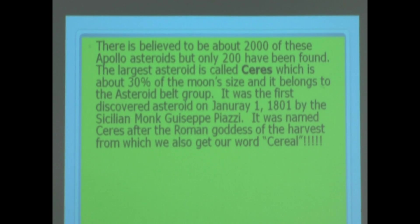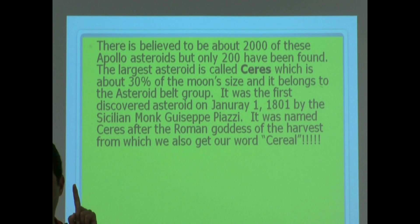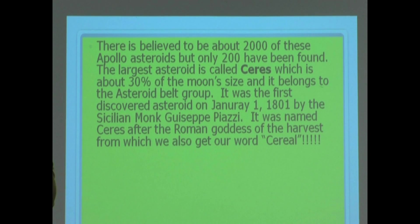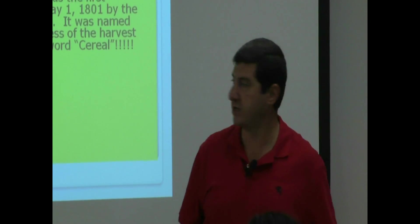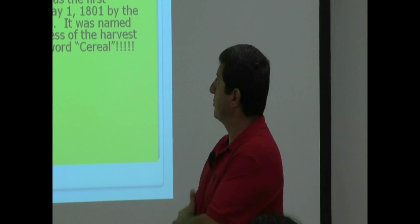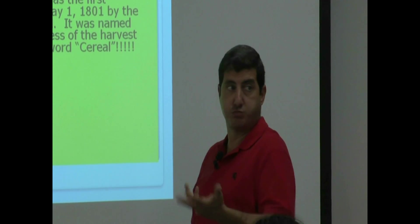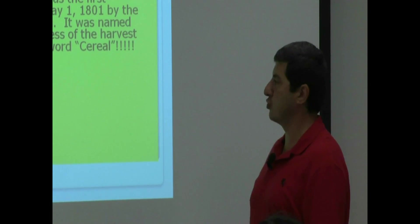So, there is believed to be about 2,000 of these Apollo asteroids. Apollo is the ones that are dangerous to us, you see? But only 200 have been found. The largest asteroid is called Ceres. That's the largest asteroid of any of them. Which is about 30% of the Moon's size. So, that's still pretty big, even though it's small. And it belongs to the asteroid belt group.